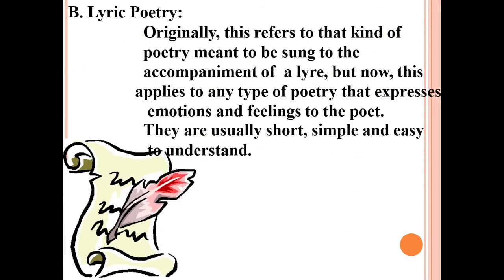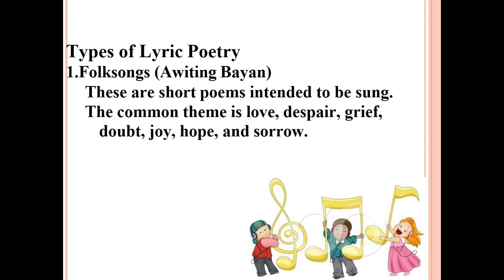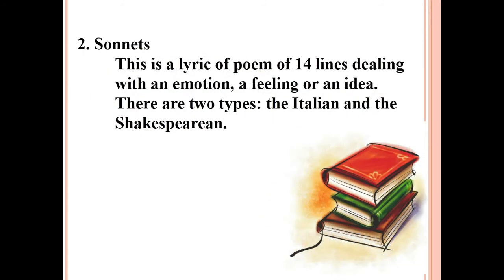Lyric poetry originally referred to the kind of poetry meant to be sung to the accompaniment of a lyre, but now it applies to any poetry that expresses emotions and feelings of the poet. Lyric poems are usually short, simple, and easy to understand. The first type of lyric poetry is folk songs (awiting bayan) — short poems intended to be sung. Common themes are love, despair, grief, doubt, joy, hope, and sorrow. The sonnet is a lyric poem of 14 lines dealing with an emotion, a feeling, or an idea. There are two types: Italian and Shakespearean.